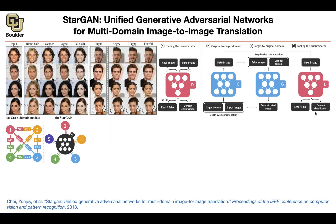For cycle consistency, because you didn't have pairs of data, you needed to create pairs of data on the fly. So you take your fake image and the original domain as the condition, give it to the generator, and it gives you a reconstructed image. Now you're back in the domain of the original input, and you can compare the two images. This is the idea of the reconstruction loss.